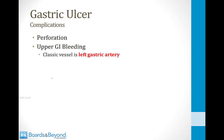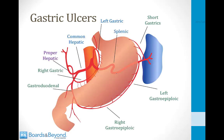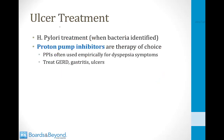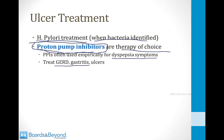Many complications of gastric ulcers are similar to those of duodenal ulcers — they can perforate and cause upper GI bleeding, classically from the left gastric artery running along the lesser curvature. The treatment of ulcers, whether duodenal or gastric, is to treat the H. pylori infection when identified and administer proton pump inhibitors. These lower acid content and allow the ulcer to heal. Proton pump inhibitors are often used empirically for dyspepsia since they treat not only ulcers but also GERD and gastritis.